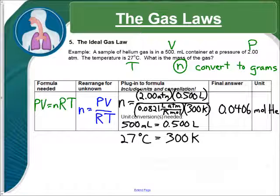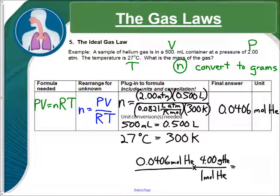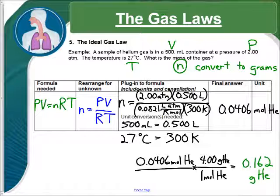Okay, so we solved for moles of helium, but they wanted to know the mass of the helium, so we need to add one more step. 0.0406 moles of helium. If we do the mole conversion, and one mole of helium, there's 4.00 grams, we get an answer of 0.162 grams of helium.